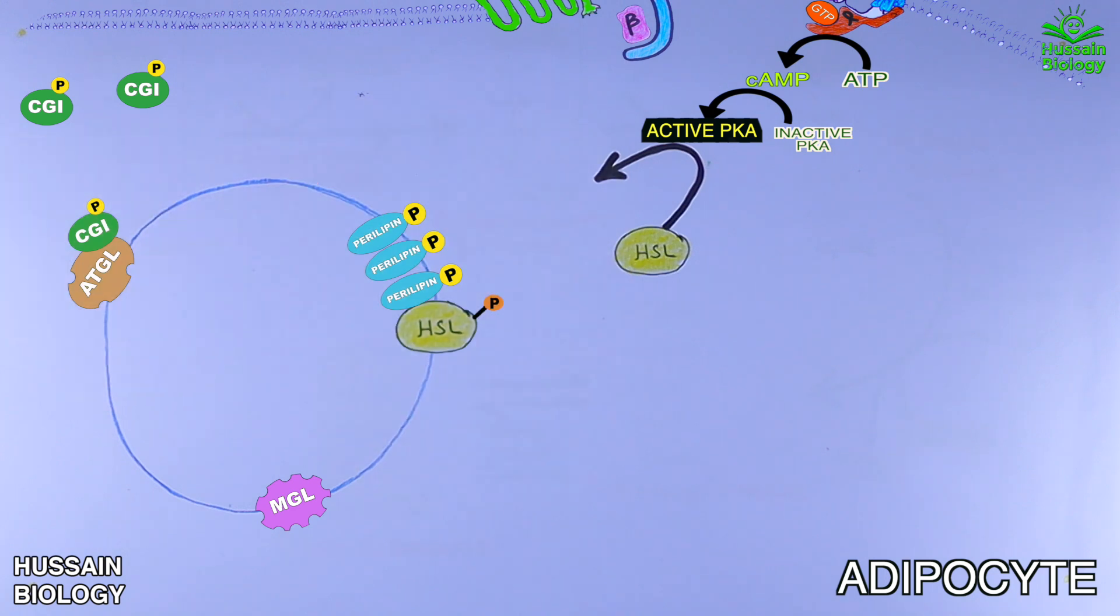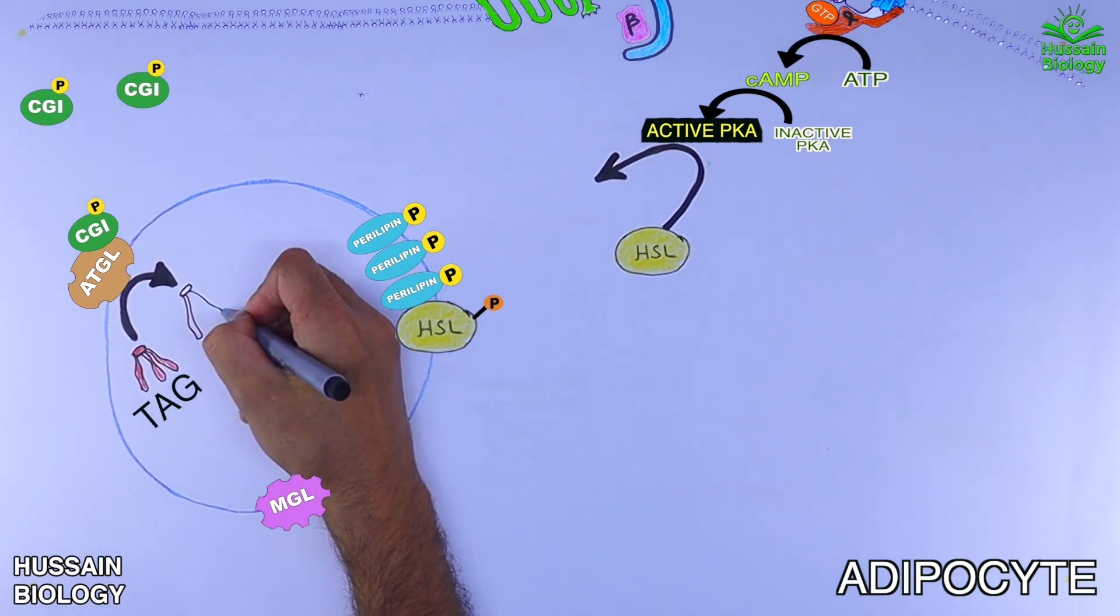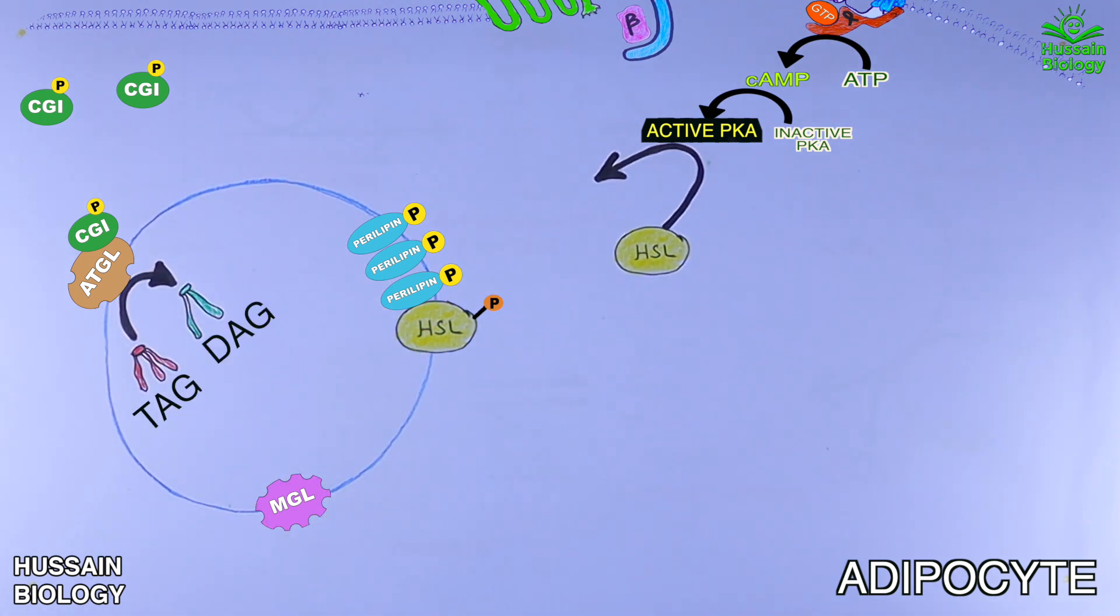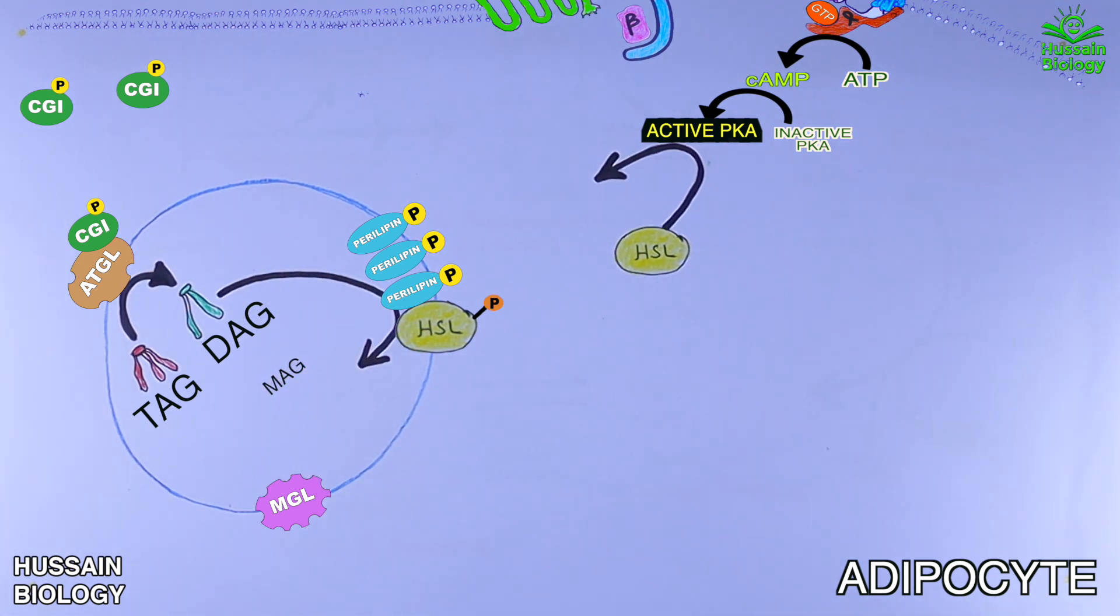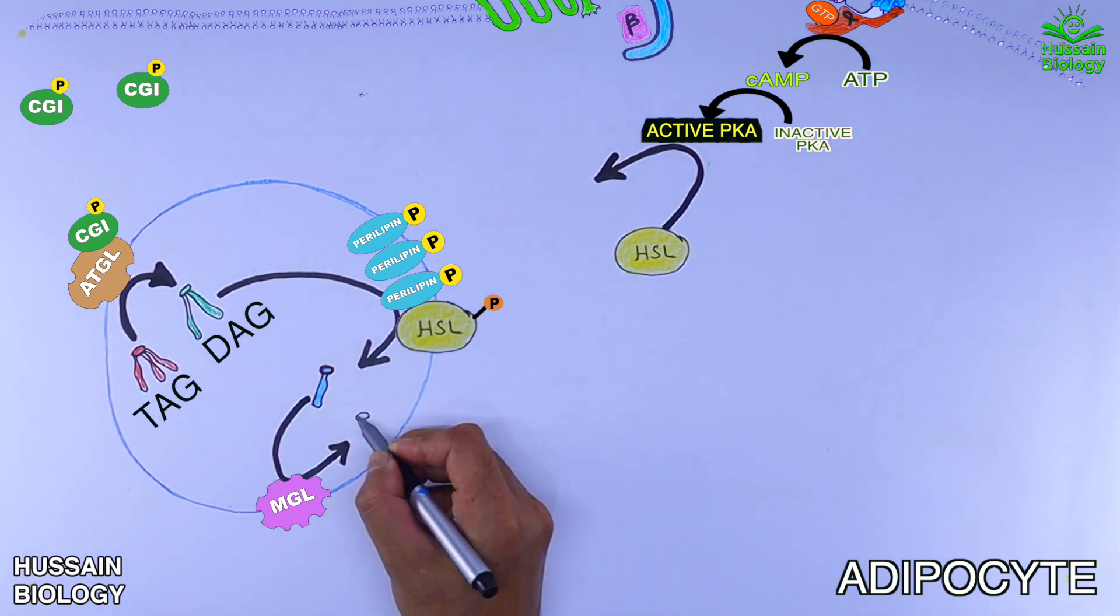Now from here the active ATGL converts triacylglycerols to diacylglycerols. Then the HSL and perilipin protein act on this diacylglycerol and convert it into monoacylglycerol. Furthermore this monoacylglycerol is acted upon by MGL enzyme and converts it into glycerol.